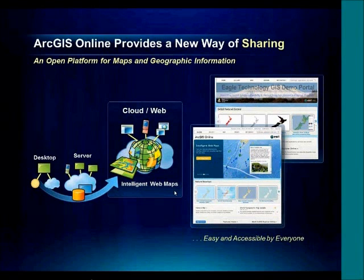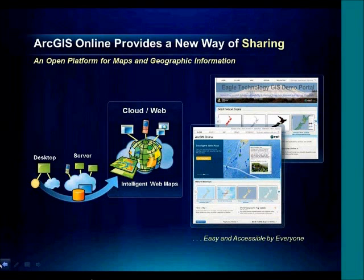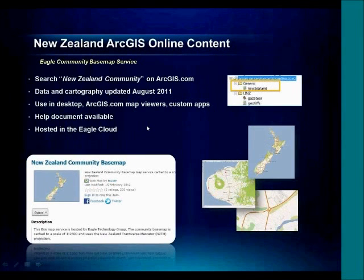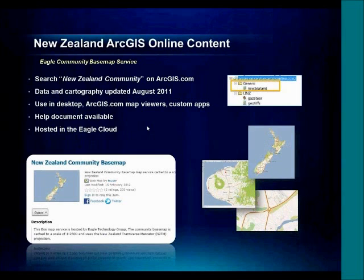I could probably go on about ArcGIS Online for the next 45 minutes, but perhaps this is another webcast. I just really want you to think of ArcGIS Online today as this sort of shop window for GIS data. So let's get into some of the content I've promised you today. I'm going to start off with EGLE's Community Basemap Service. If you go to ArcGIS.com and search 'New Zealand Community' or 'NZ Community', you'll come across our EGLE Community Basemap.